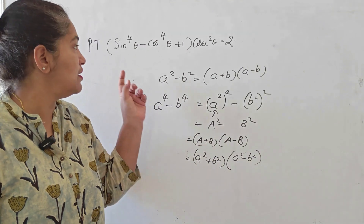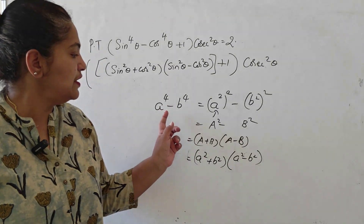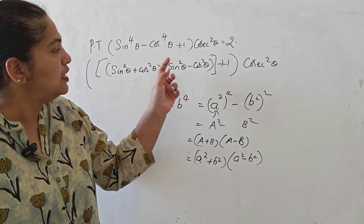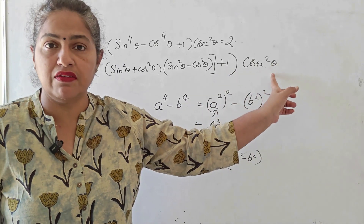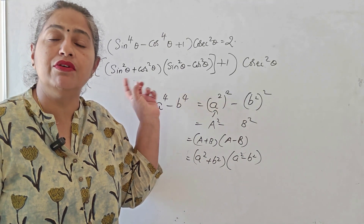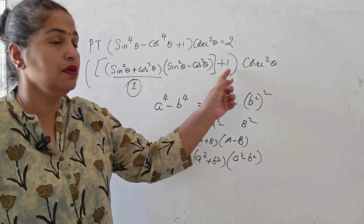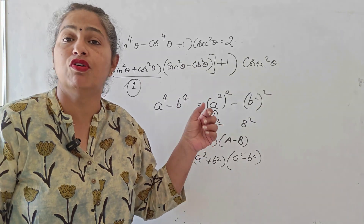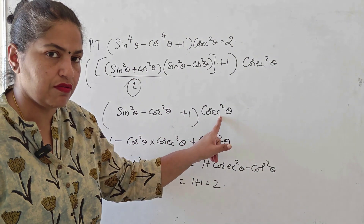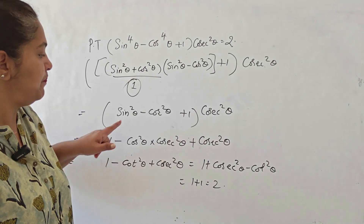So our LHS becomes (sin²θ + cos²θ)(sin²θ − cos²θ + 1) cosec²θ. Now sin²θ + cos²θ = 1, so this simplifies to (sin²θ − cos²θ + 1) cosec²θ. Opening the bracket: cosec²θ × sin²θ = 1 (they are reciprocals), minus cos²θ × cosec²θ, plus 1 × cosec²θ.